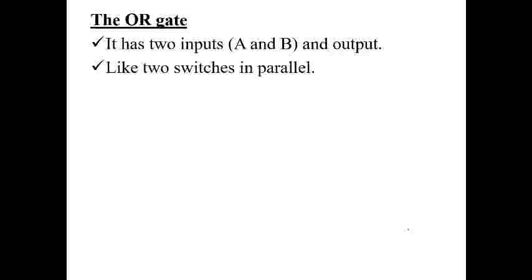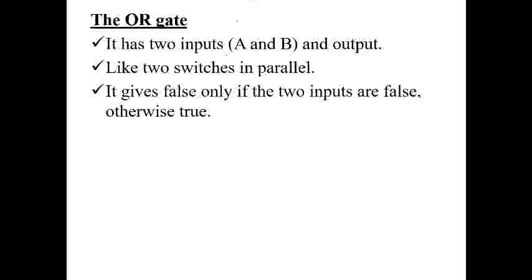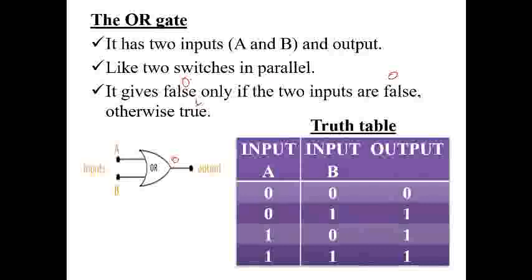The fourth gate is the OR gate. It has two inputs and one output, and is like two switches in parallel. It gives false (0) only when both inputs are 0; otherwise the output is 1. Truth table: 0,0→0; 0,1→1; 1,0→1; 1,1→1. For the NOR gate, a small circle is added to the output of the OR gate symbol.